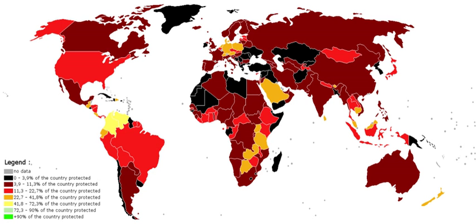The IUCN Protected Area Management Categories are: Category IA — Strict Nature Reserve; Category IB — Wilderness Area; Category II — National Park; Category III — Natural Monument or Feature; Category IV — Habitat/Species Management Area; Category V — Protected Landscape/Seascape; Category VI — Protected Area with Sustainable Use of Natural Resources.